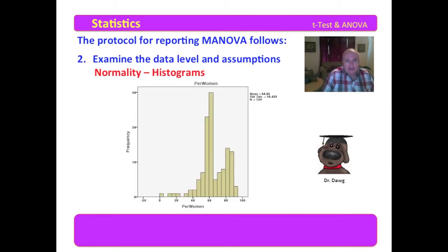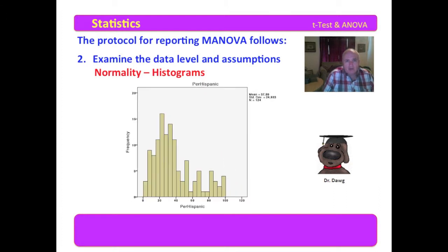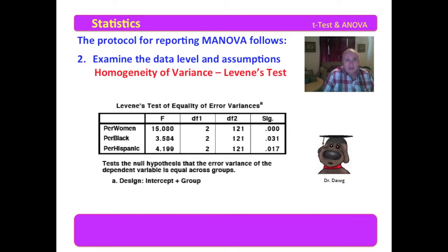You also want to provide the histograms. This is the histogram for the percent of women, the percent of black enrollment, and the percent of Hispanic enrollment.